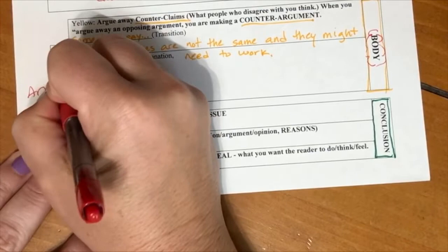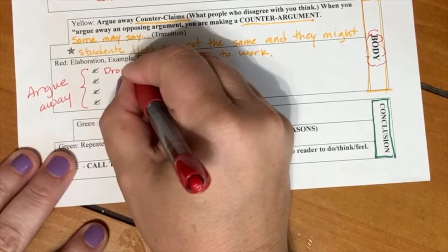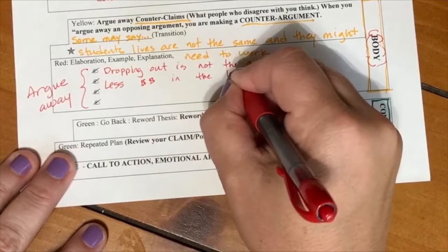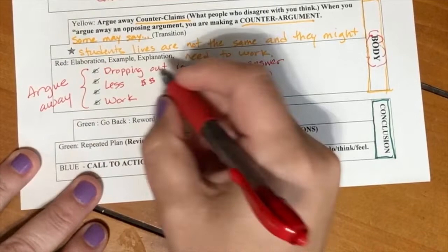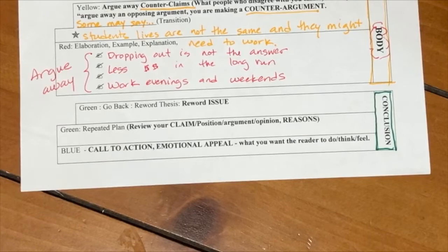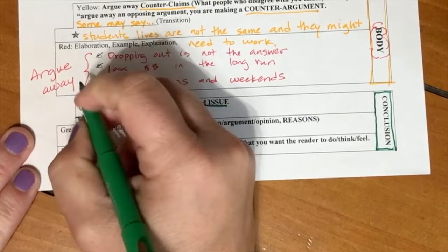In the body of that paragraph is when you're going to have your counterargument. You're going to argue this away. For example, the counterclaim that I address is some may say students' lives are not the same and they might need to work. Then I would argue back, my counterargument would be that dropping out is not the answer. Requiring students to, allowing students to drop out is not the answer. They're going to make less money in the long run. And students who really need to work, they can work on evenings and weekends to make the money they need to use to help their family.